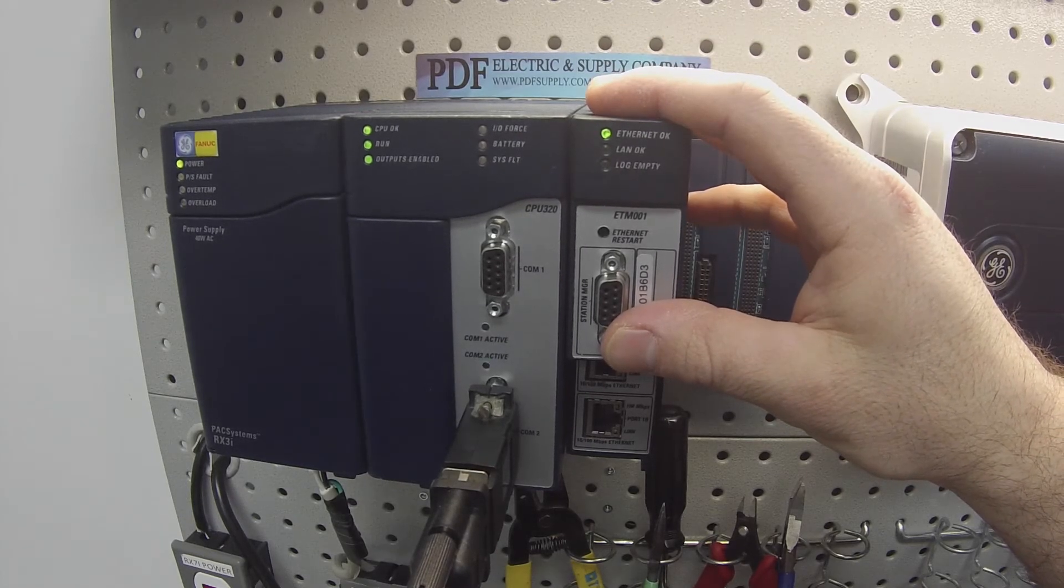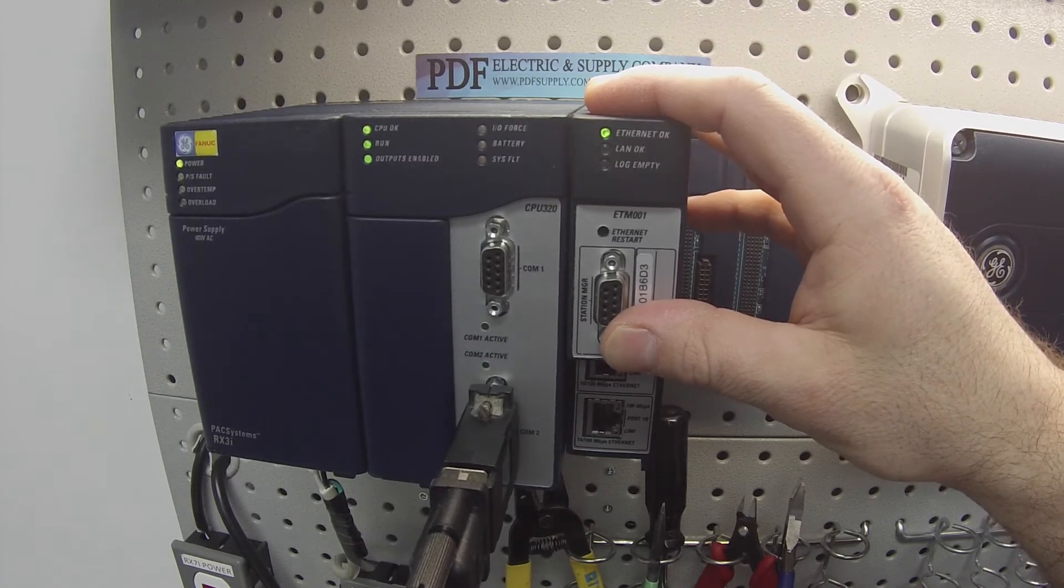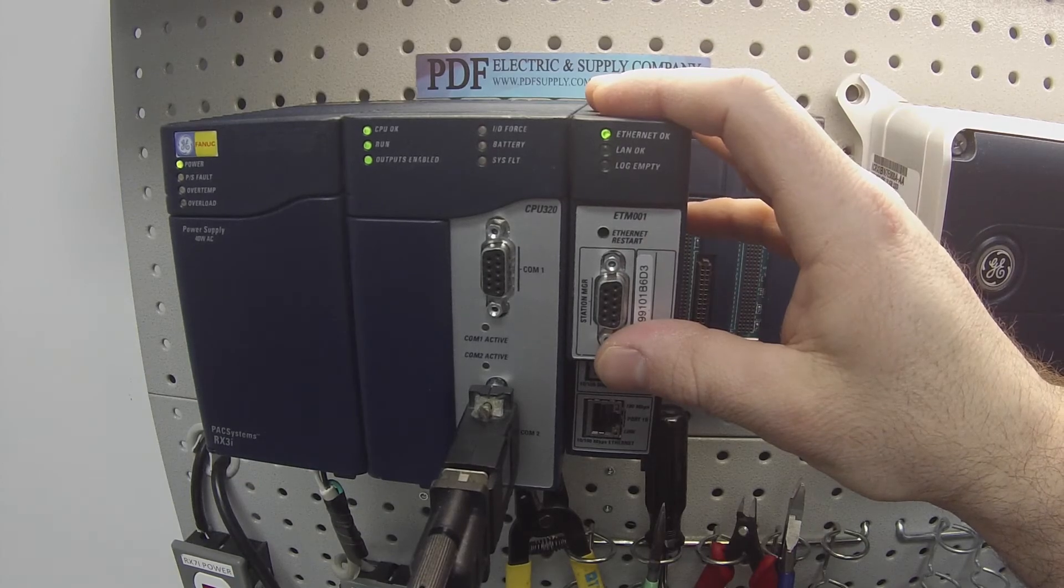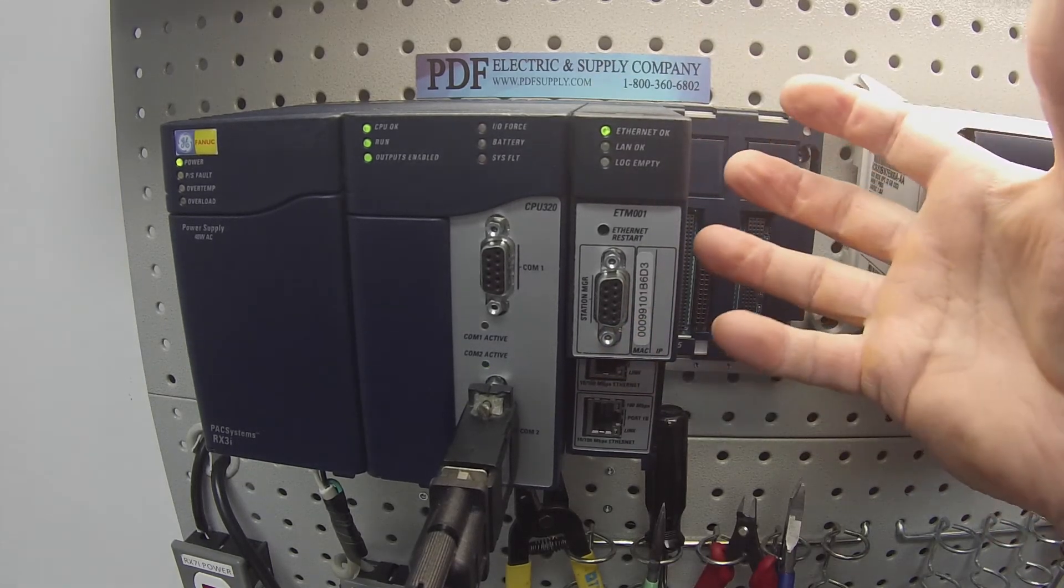That's something to be aware of and that's exactly what that blinking in unison light pattern means. It means that it's ready for an update.